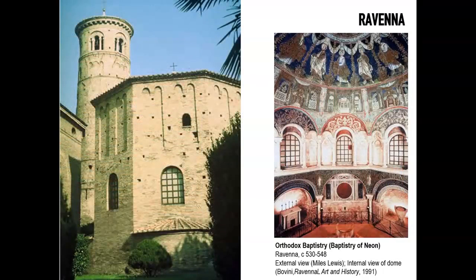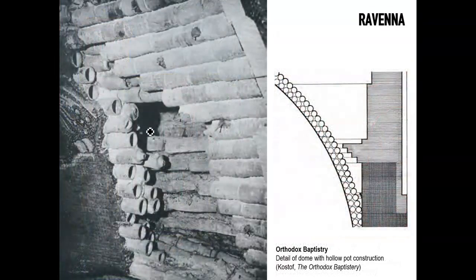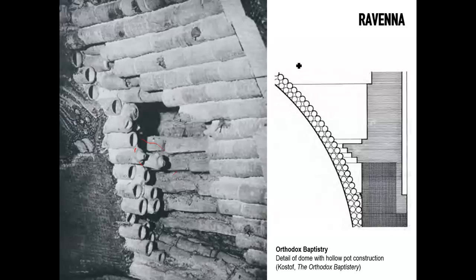Another example in Ravenna is the Orthodox Baptistry, or Baptistry of Neon, where you again see almost austere brick construction — very simple — giving the structure to a domed space embellished by mosaics inside. This building also features the so-called tubifittili: terracotta tubes originally used by Romans for pipes, recycled and reused in a novel way to create a lightweight vault of terracotta, finished with mosaic.